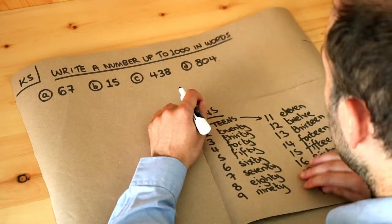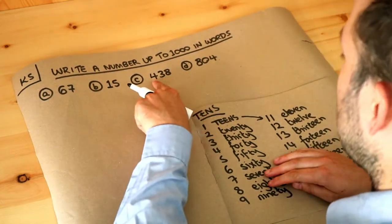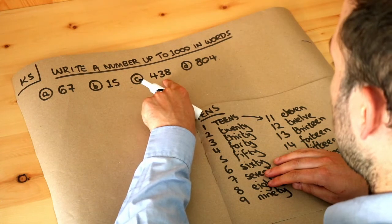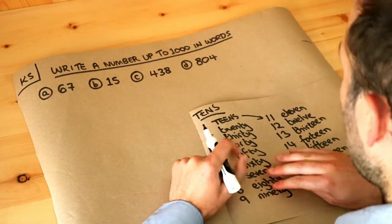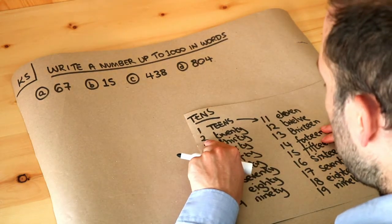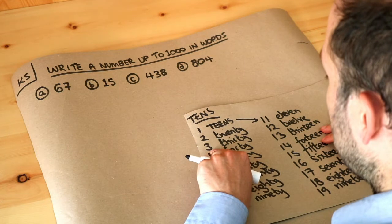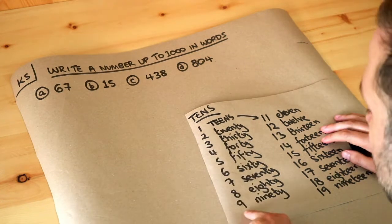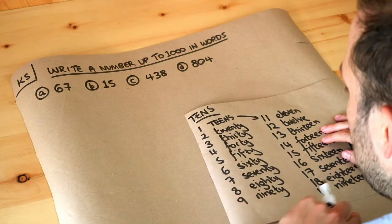Now in the previous video we looked at how we first say the hundreds digit, then we say what the tens digit is and then what the units digit is. And with the tens we have a bunch of special words. For example, if the tens digit is a two we would say twenty, if the tens digit is three we'd say thirty, etc., up to ninety if the tens digit is nine.